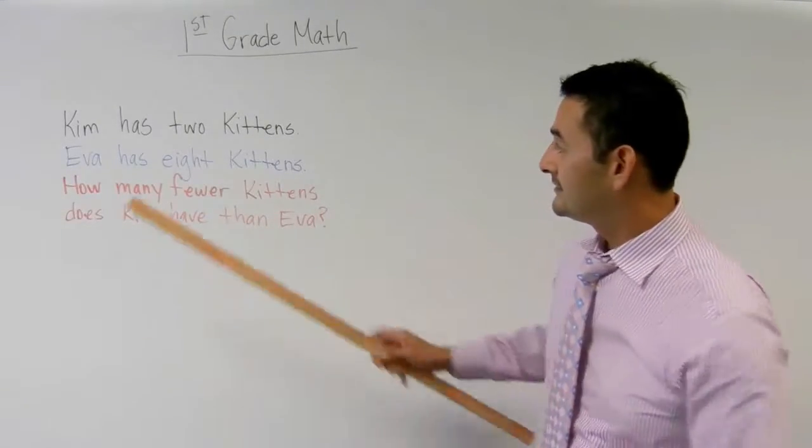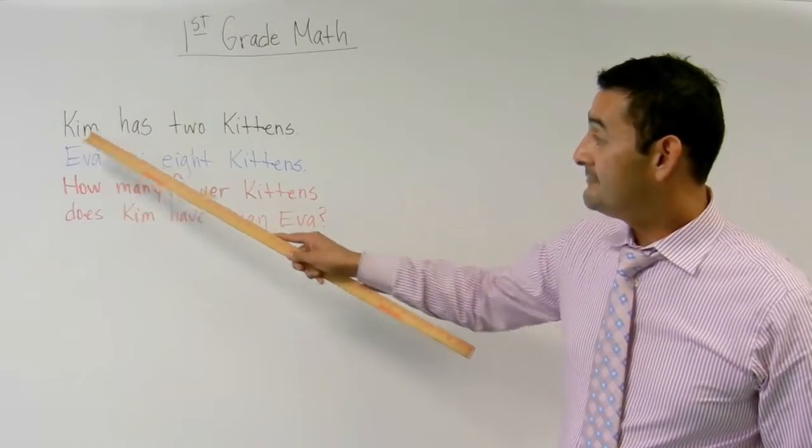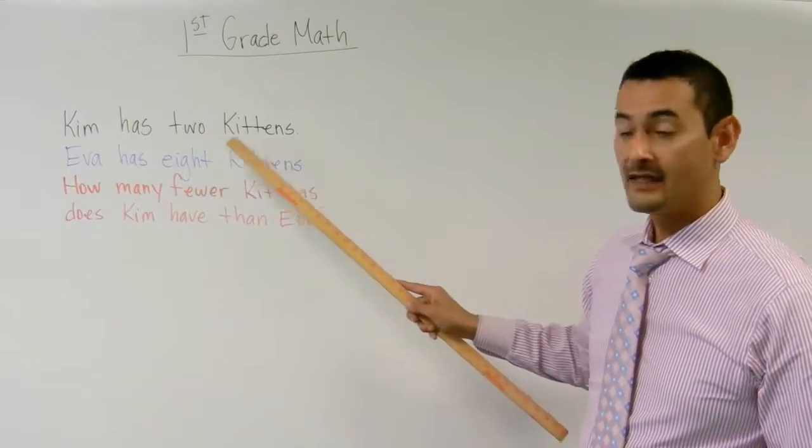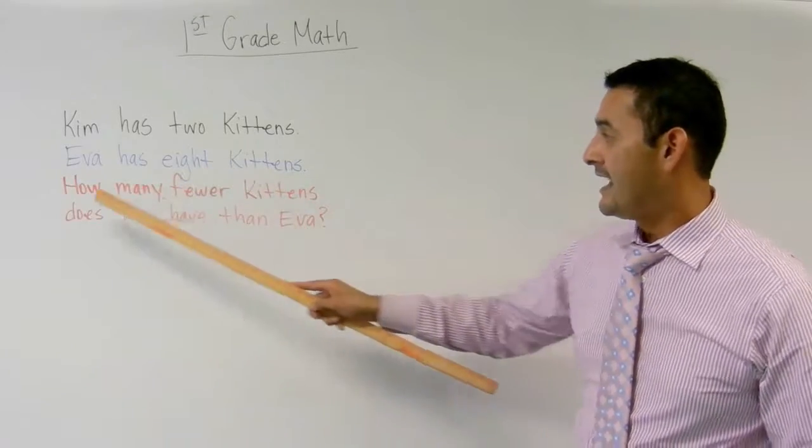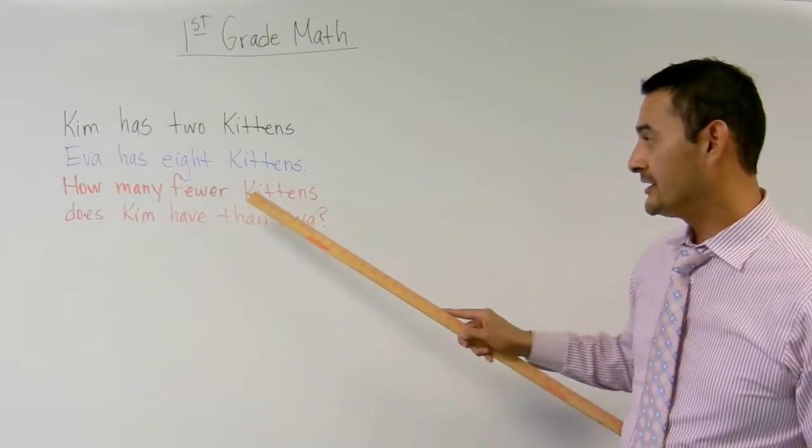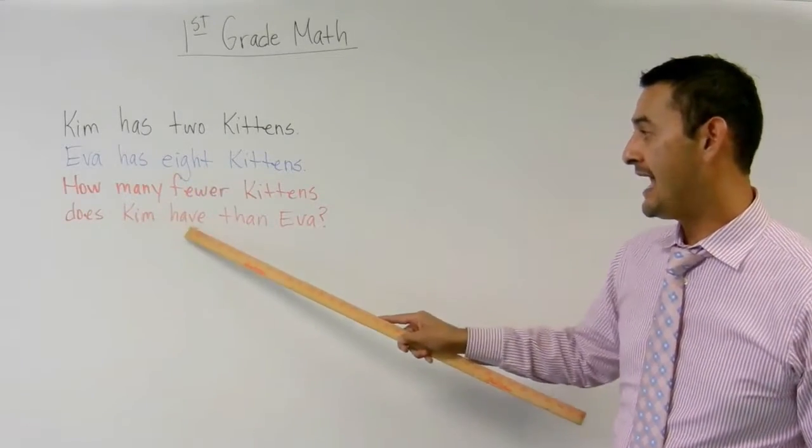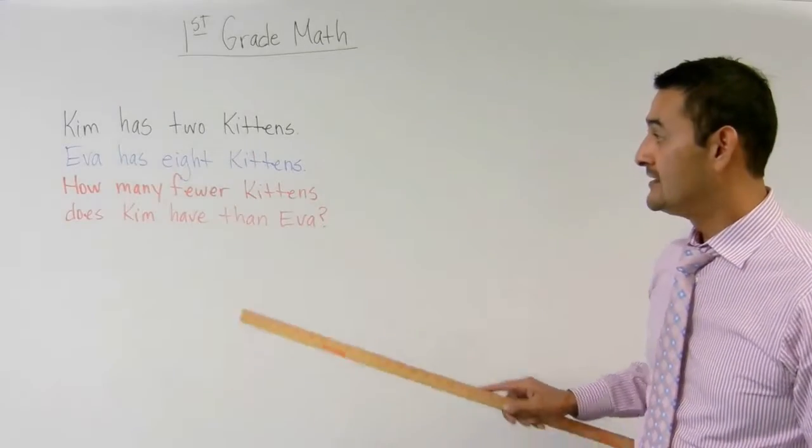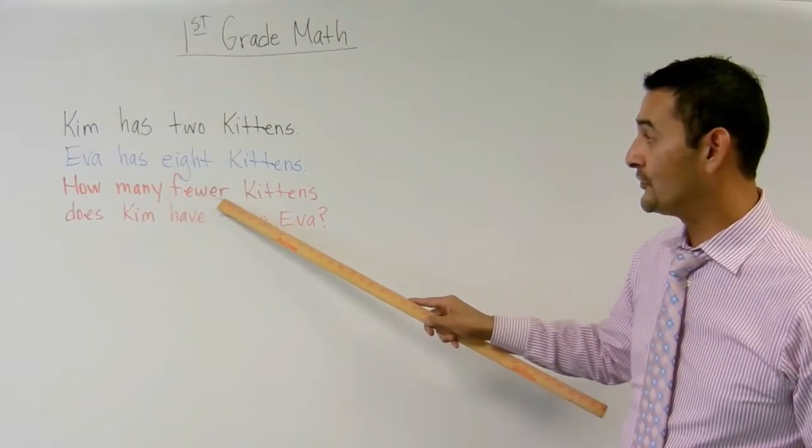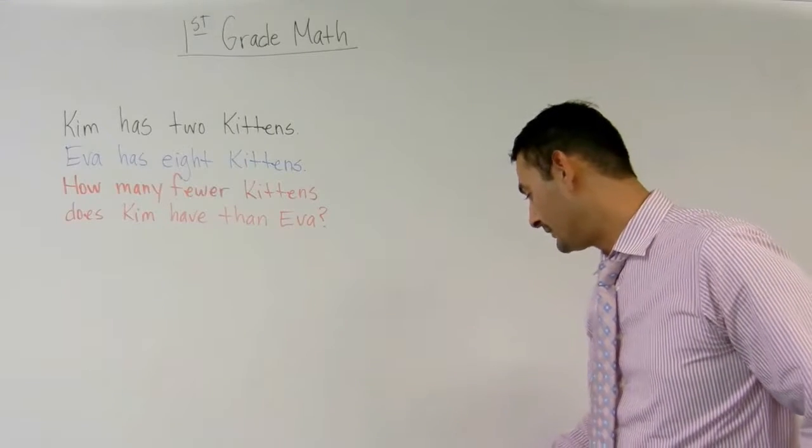This says, let me get this ruler here. It says Kim has two kittens. Eva has eight kittens. How many fewer kittens does Kim have than Eva? So the key word here is fewer. And let's go ahead and take a look at the problem.